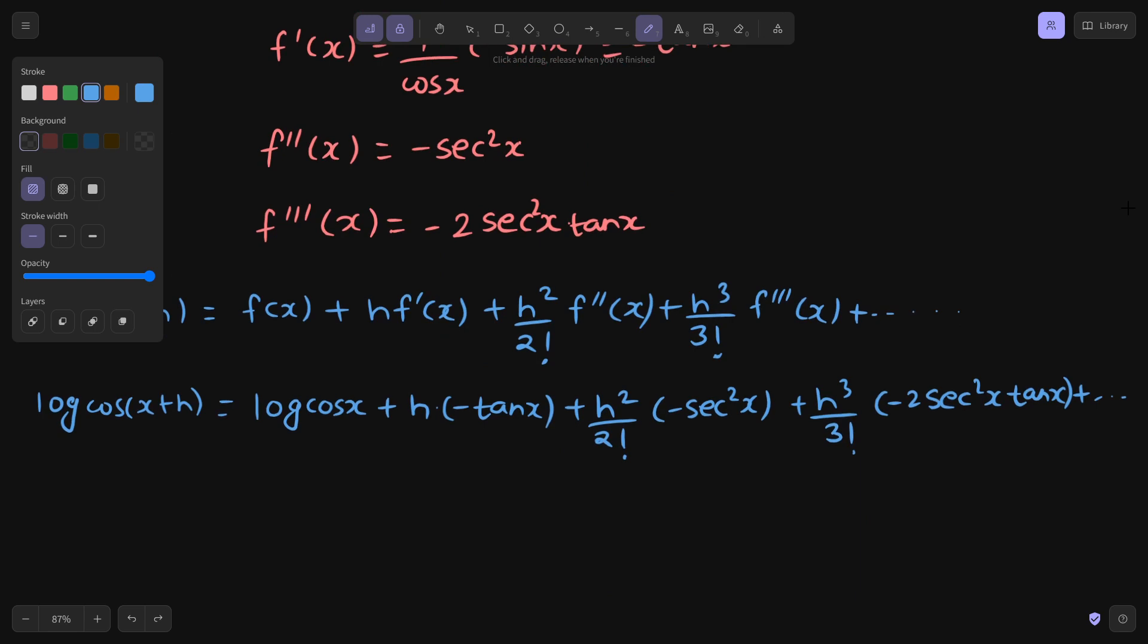So we can just simplify this and write log cos(x+h) as first term is already simplified, log cos(x). Second term we can write minus in front h tan(x). In the next term again we can write minus in front and 2 factorial is 2. So minus h^2 by 2 secant square x.